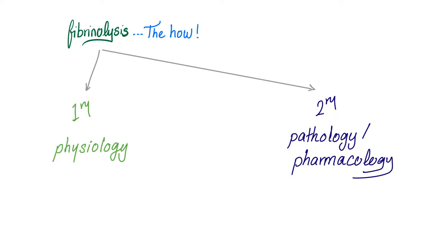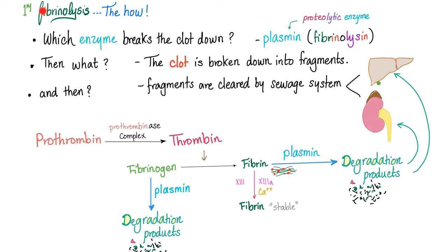Fibrinolysis — the how, the mechanism. Primary is physiology; secondary is pathology and pharmacology. Primary fibrinolysis: which enzyme breaks the clot down? It's called plasmin — the protein that's in the plasma. It's a proteolytic enzyme, which makes perfect sense because the fibrin clot is made of protein fibers and you need a proteolytic enzyme to break them down.